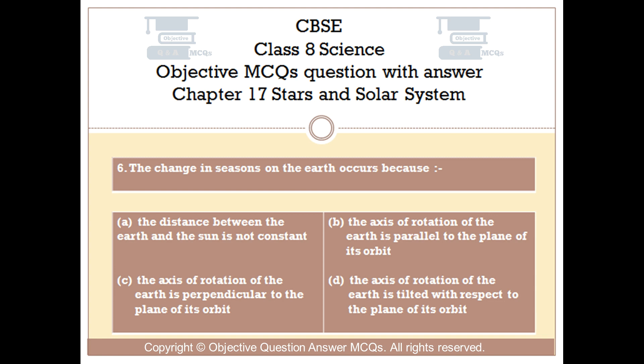Question number 6. The change in seasons on the Earth occurs because: Option A: the distance between the Earth and the Sun is not constant. Option B: the axis of rotation of the Earth is parallel to the plane of its orbit. Option C: the axis of rotation of the Earth is perpendicular to the plane of its orbit. Option D: the axis of rotation of the Earth is tilted with respect to the plane of its orbit.